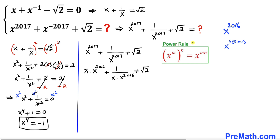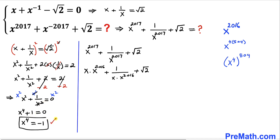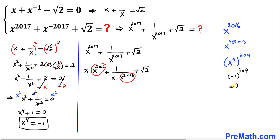Using the power rule of exponents, x power 2016 can be written as x power 4 whole power 504. We know x power 4 equals negative 1, so substituting gives us negative 1 whole power 504. Since 504 is an even power, this gives us positive 1. Thus x power 2016 turns out to be positive 1 in both places, so we replace those with 1.